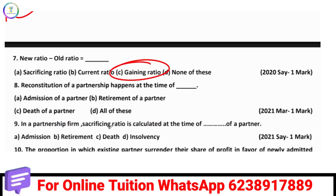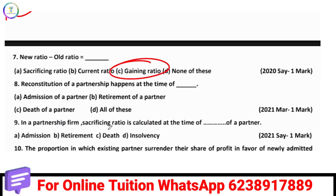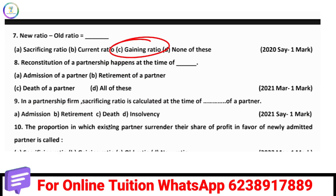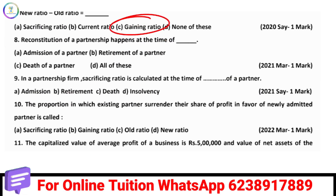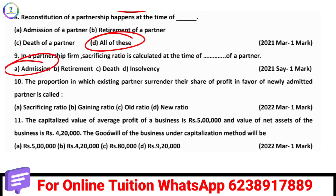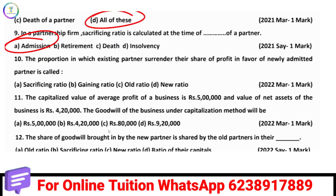If you have a sacrificing ratio, you give it based on the old ratio. Reconstitution of a partnership is the same in cases of admission, retirement, and death. The sacrificing ratio is the proportion in which existing partners surrender their share of profit in favour of a newly admitted partner.